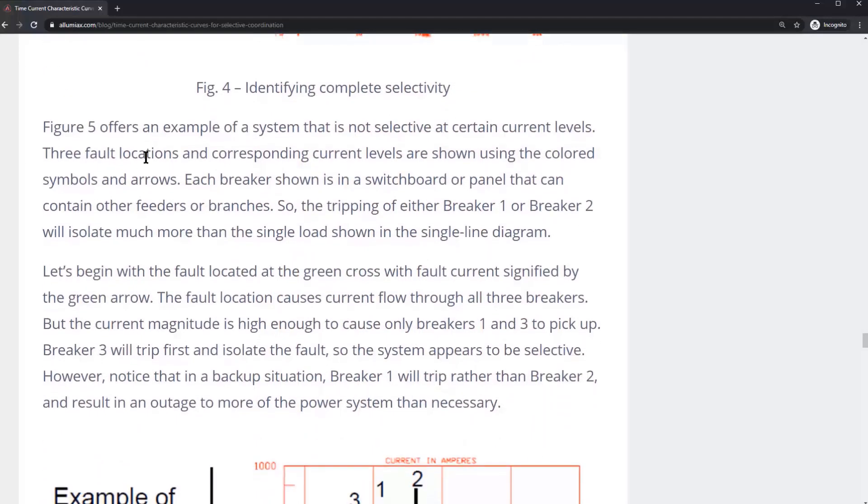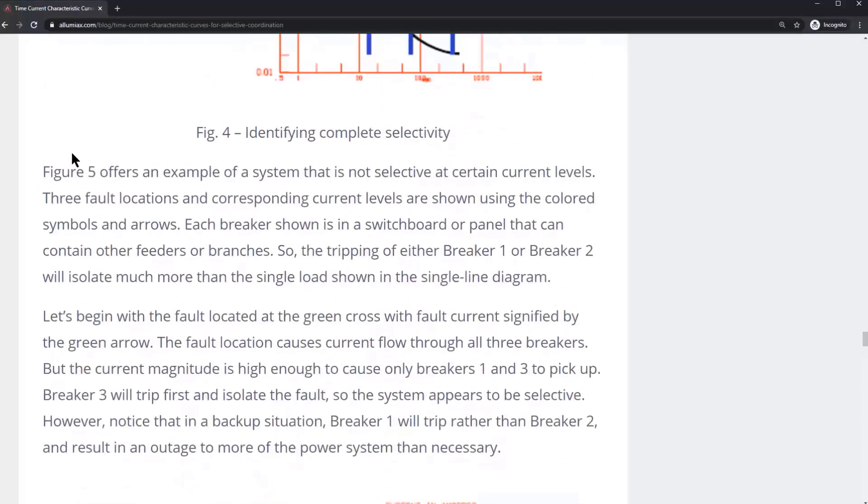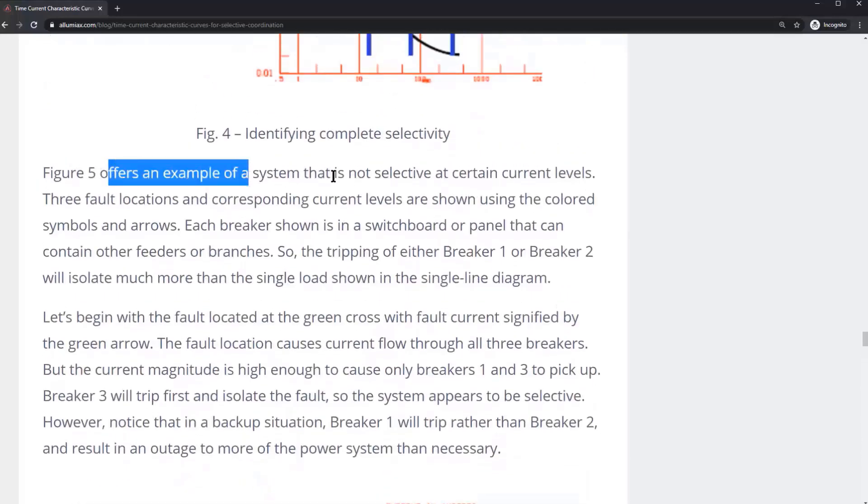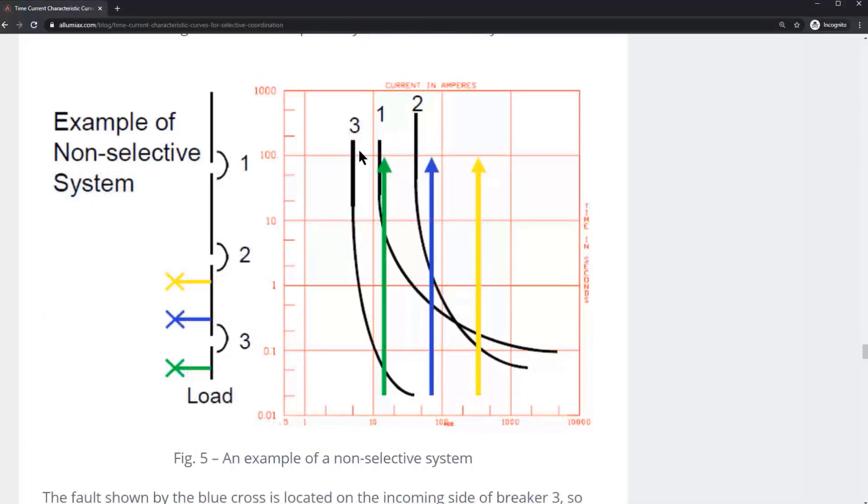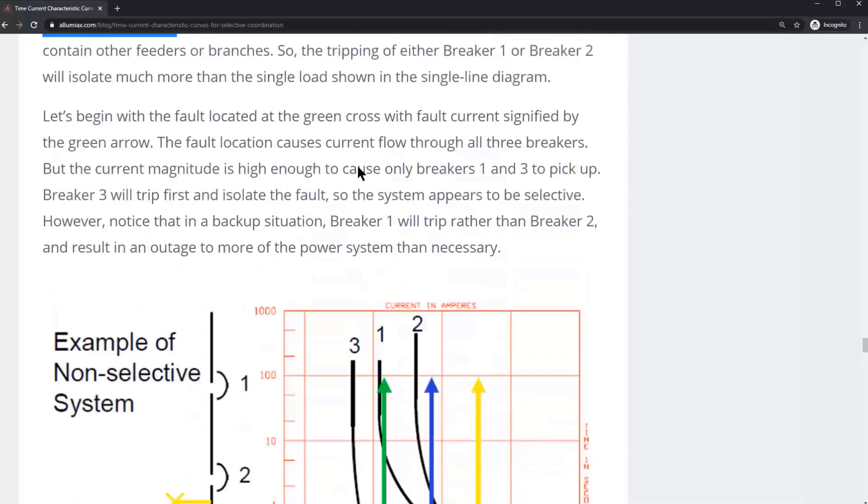Now Figure 5, which is this figure right here, offers an example of a system that is not selective at certain current levels. Breaker number three is furthest to the load and is the furthest to the left and the most bottom. Breaker number two is in the middle, and breaker number one should be furthest to the top.